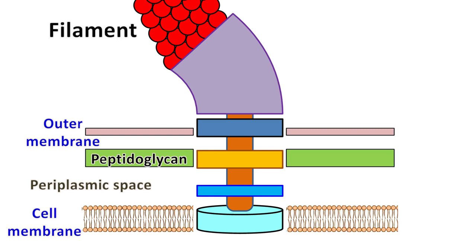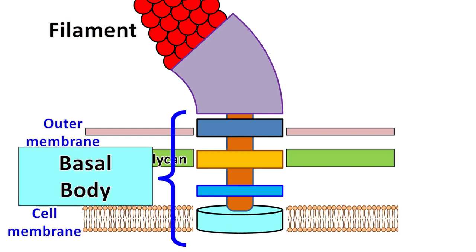Number one, the longest structure is known as the flagellar filament. Number two, the basal body is embedded in the cell membrane. And number three, a hook-like structure that connects the flagellar filament with the basal body.